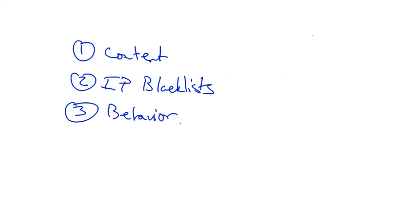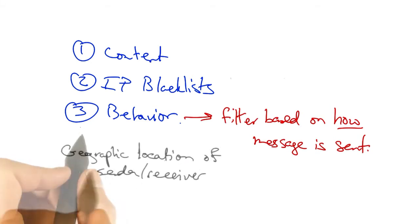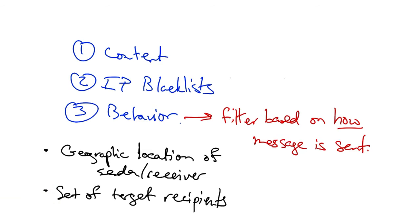The third approach is to filter a message on how it is sent. In particular, we can look at such features as the geographic locations of the sender and receiver, the set of target recipients, the sender's upstream ISP,